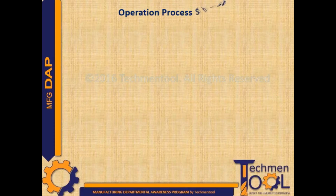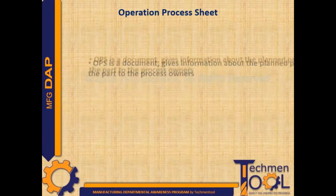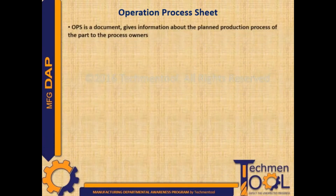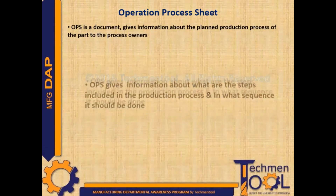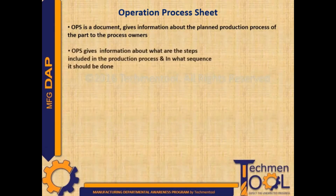An Operation Process Sheet is a document that gives information about the planned production process of a part. It is directed to process owners, usually operators or setters, and provides information about what steps are included in the production process.